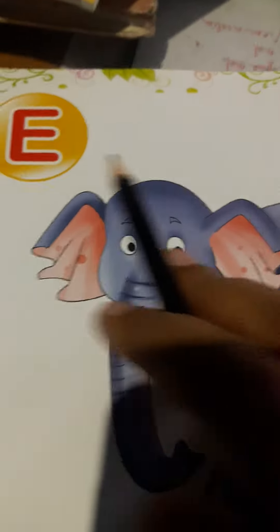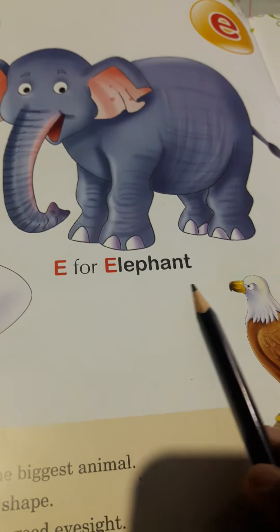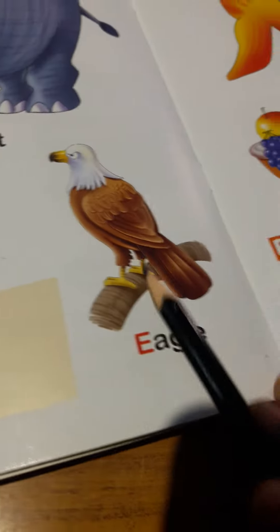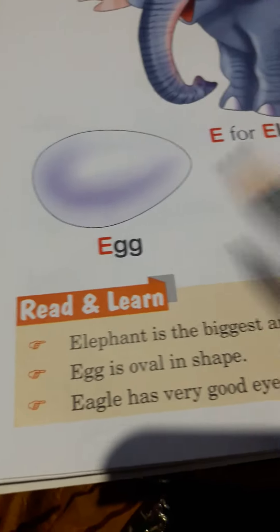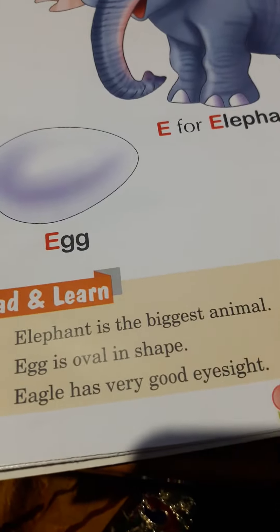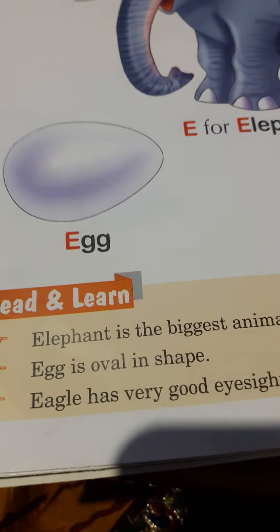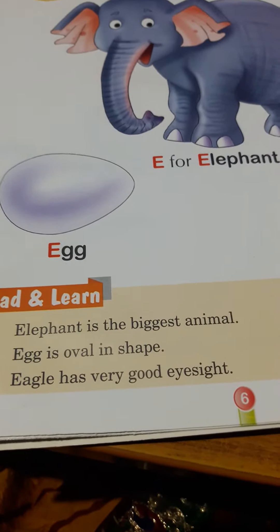So E is for elephant — E-L-E-P-H-A-N-T, elephant. E is for egg — E-G-G, egg. And E is for eagle — E-A-G-L-E, eagle. Elephant is the biggest animal. Egg is oval in shape. And eagle has very good eyesight.